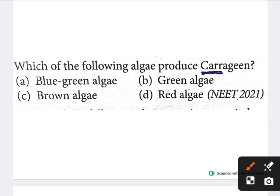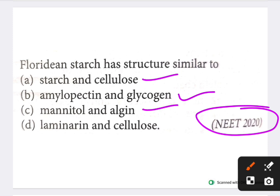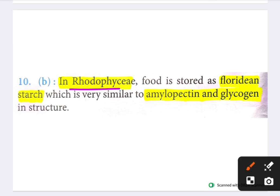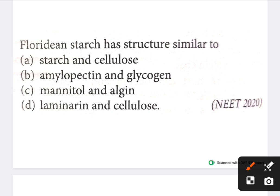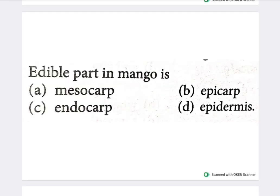Next question — NEET 2020: Floridian starch has structure similar to which of the following? Options are starch and cellulose, amylopectin and glycogen, mannitol and algin, laminarin and cellulose. The answer is amylopectin and glycogen. In Rhodophyceae, food is stored as Floridian starch, which is very similar to amylopectin and glycogen in structure.